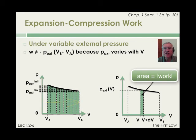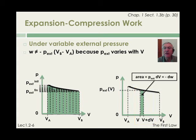When the volume changes from v to v plus dv, where dv is an infinitesimally small volume change, the area under the curve is p external times dv. And the incremental work, denoted dw, is equal to minus p external times dv.